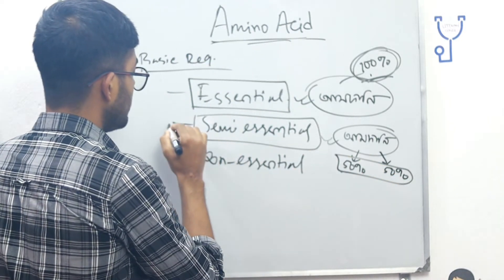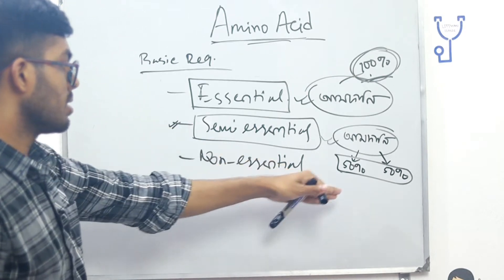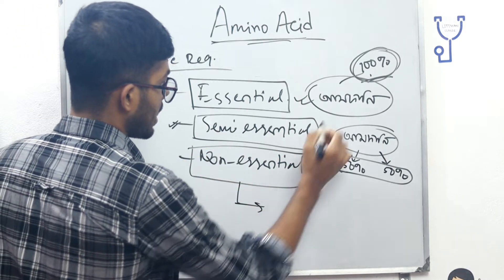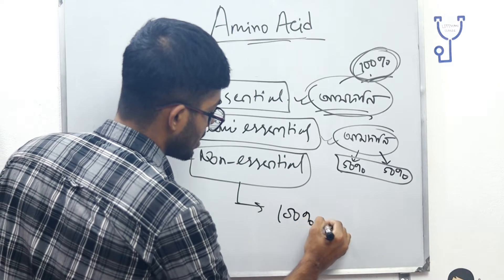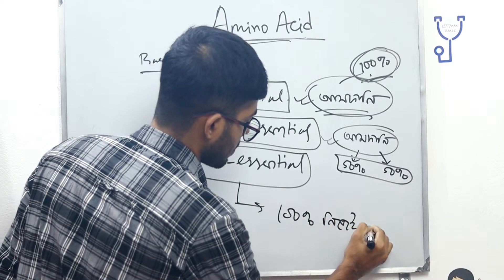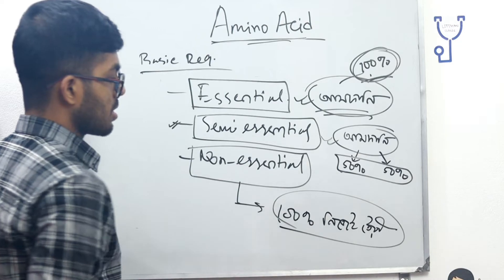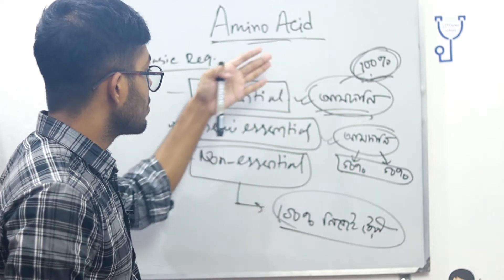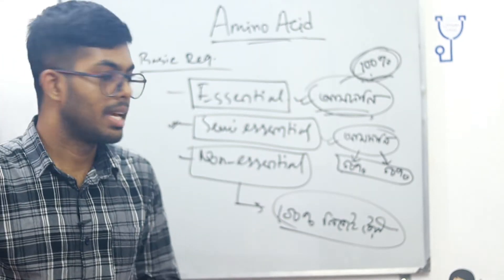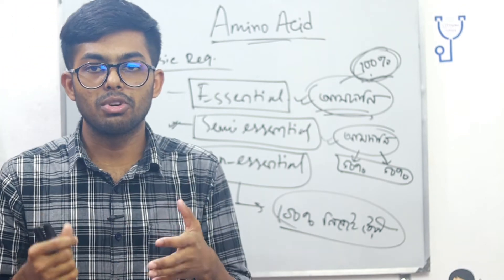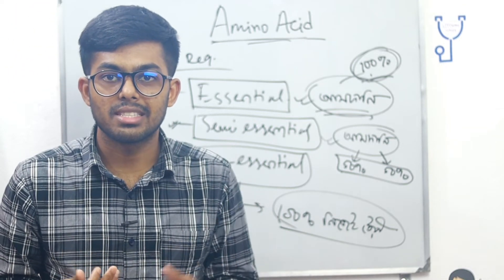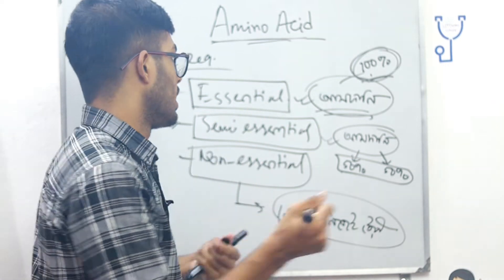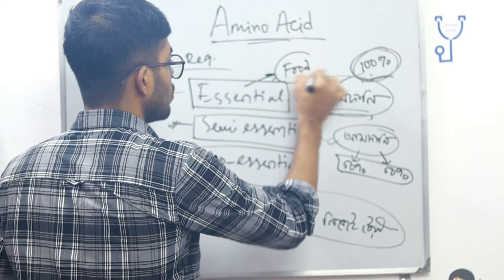Going to the classification: semi-essential and non-essential. Essential amino acids — the body cannot produce them, so it is essential that we get them from food and nutrition.